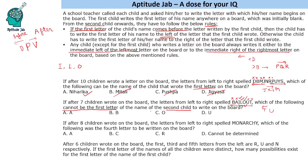Now our task is to find which letter cannot be the second child. Looking at option A: if I is the first letter, A can be the second — so A is possible. For B: if we have any of I, L, or O as the first letter, B cannot be the second, because A will already have come before B on the left side. So B is our answer — it cannot be the second child. O is quite possible: if L is first, O can be second. U is also possible: if O is first, U can be second. So all others are possible except B.